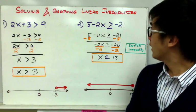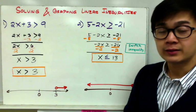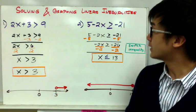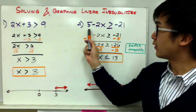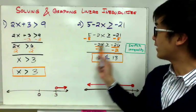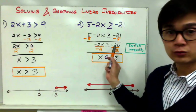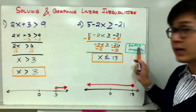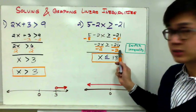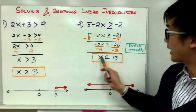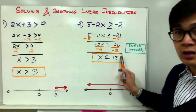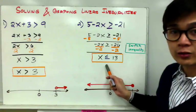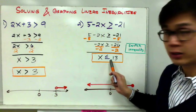For example number 2, I have 5 minus 2x greater than or equal to negative 21. To solve for x, you need two steps. First, subtract 5 on both sides to get negative 2x greater than or equal to negative 26. Now, since you're dividing by a negative on both sides, you need to switch the inequality symbol. Dividing by negative 2 gives you x by itself with 13 on the other side, and the inequality is now less than or equal to.